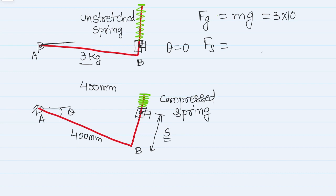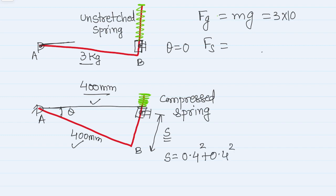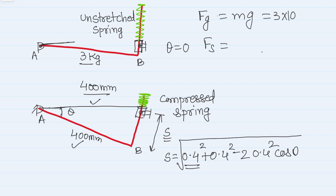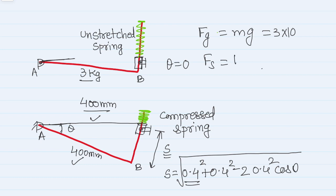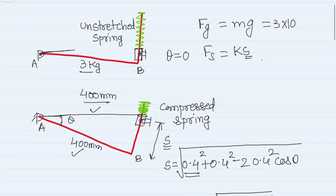To find the displacement in the spring we apply geometry. Looking at the triangle, this length is 400 mm and this length is 400 mm, and this angle is theta. Using the cosine law, s = √(0.4² + 0.4² − 2×0.4²×cosθ), which simplifies to s = 0.4√(2(1 − cosθ)). Now I can find the spring force, which is K×s using this expression.